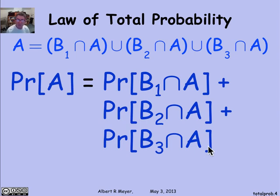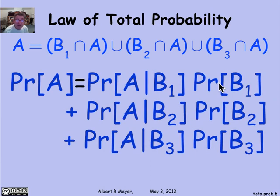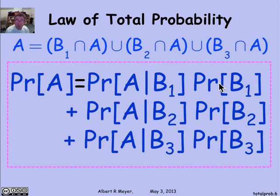Now, the most useful form of the law of total probability is when you replace this intersection, B1 intersection A, by the conditional probability using the product rule. So let's replace it by the probability of A given B1 times the probability of B1. That's just another formula for B1 intersection A. And if I do that with the rest of them, I now have the law of total probability stated in the usual way in terms of conditional probabilities, where it's most useful.